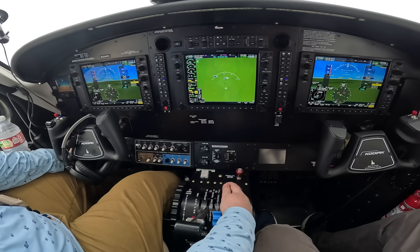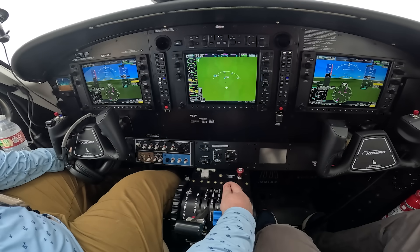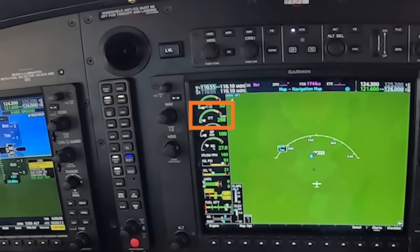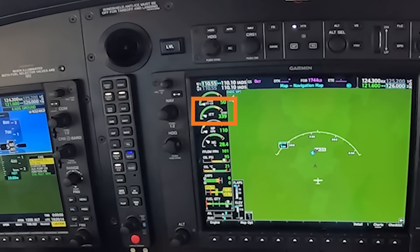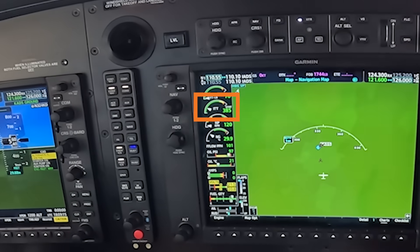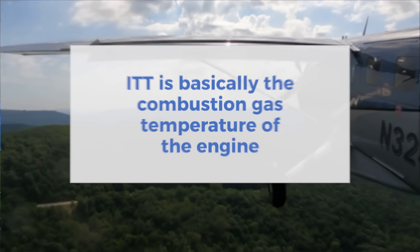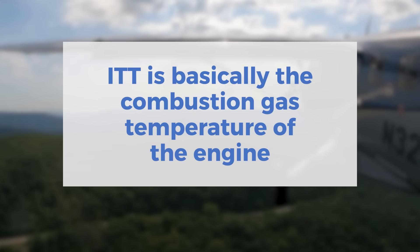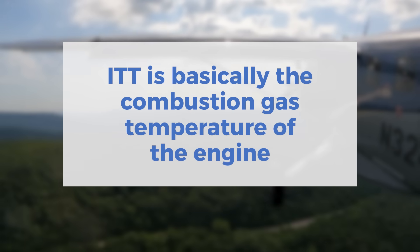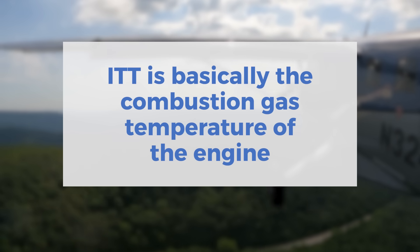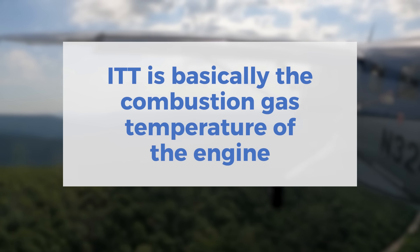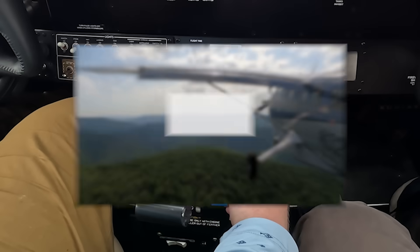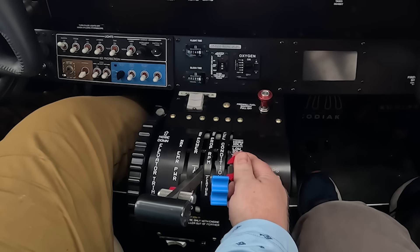Once that engine is lit, this is where the next indication comes in — ITT, which is inter-turbine temperature. It's basically the combustion gas temperature of the engine; it's a pretty close proxy for that. It's basically just showing you how hot the engine is running — that's how you can think of it.